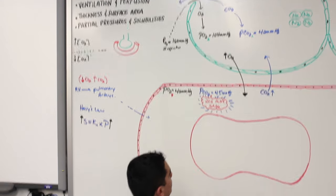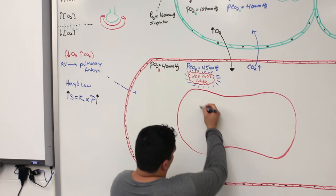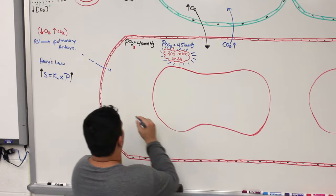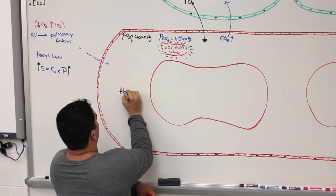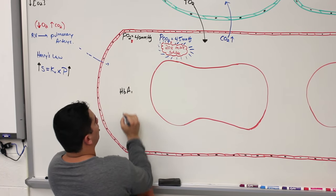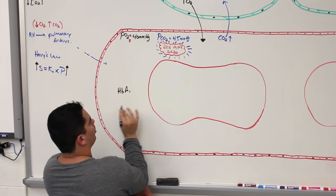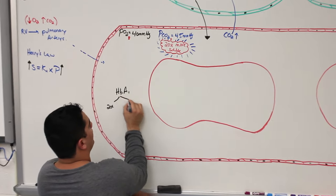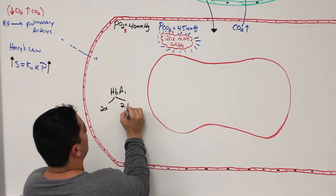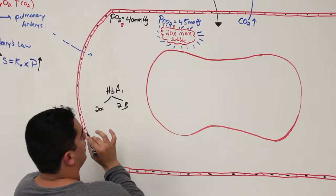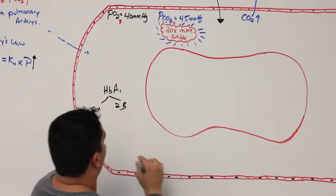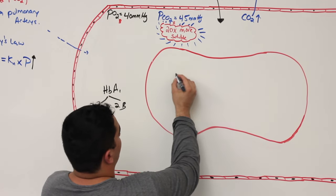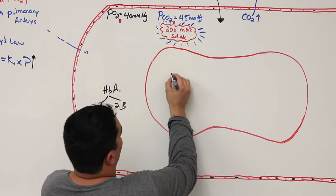But if we want to be more technical, we should look at what's happening to hemoglobin. Adult hemoglobin — hemoglobin A1 — has two alpha chains and two beta chains with iron-containing heme groups. Let's draw that: here is the heme group with alpha chains coming off, and two beta chains.